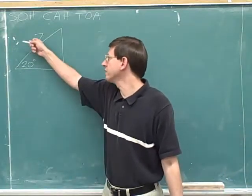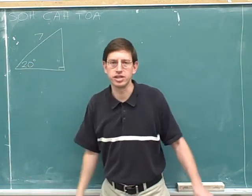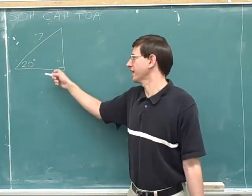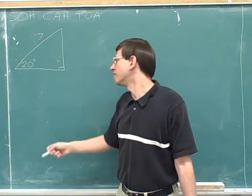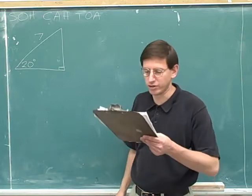Here's another problem where I'm giving you one side and one angle. This side is 7 and this angle is 20 degrees. Of course you actually know this angle too, because it's a right triangle. But I've given you one angle in addition to the right angle. That's what I mean when I say one side and one angle.